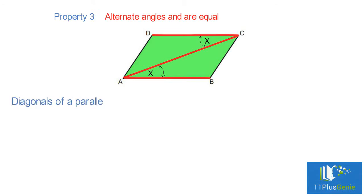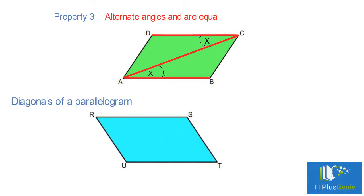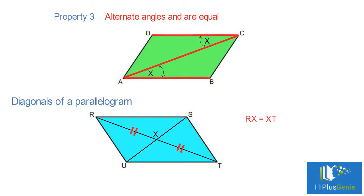Diagonals of a Parallelogram. A diagonal is a line drawn from one angle of a parallelogram to the opposite angle. In this diagram, RT and SU are diagonals. The diagonals of a parallelogram bisect each other — they divide each other into two equal halves.